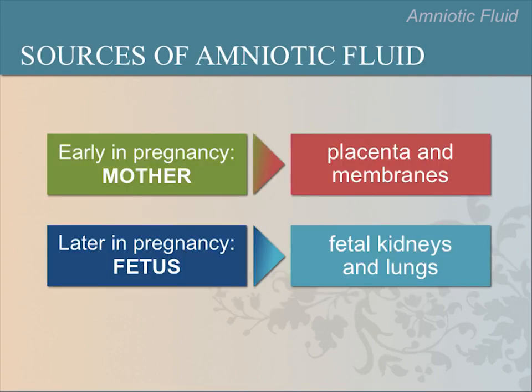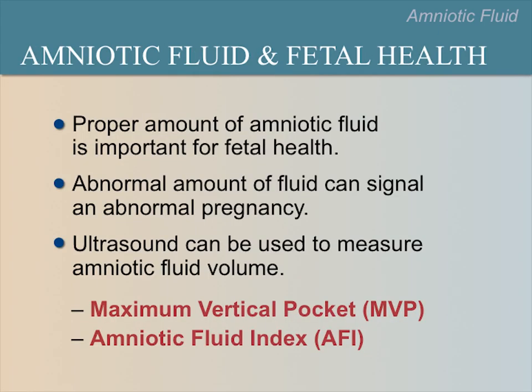Amniotic fluid is produced in different ways. Early in pregnancy, amniotic fluid is produced by the placenta and surrounding membranes. Later in pregnancy, most of it comes from the fetal kidneys and lungs. Because the amniotic fluid performs so many functions, it is very important to have the proper amount.